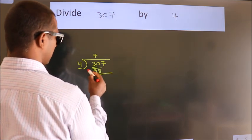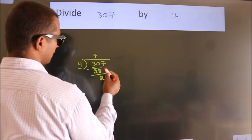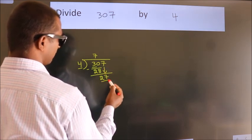Now we should subtract. We get 2. After this, bring down the beside number. So 7 down. So 27.